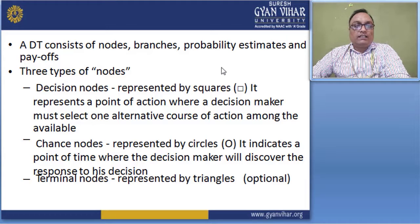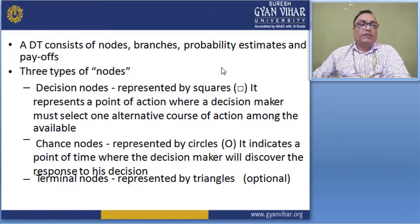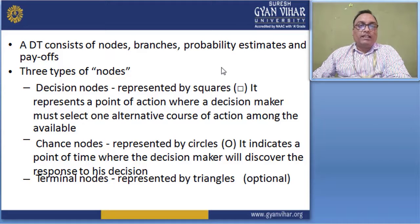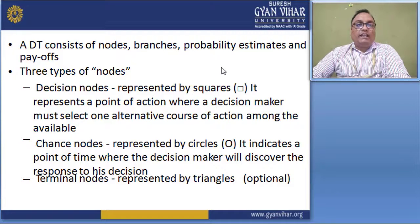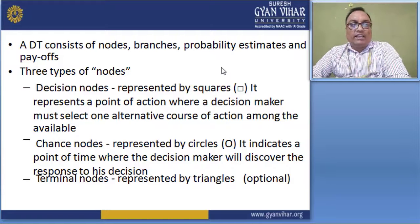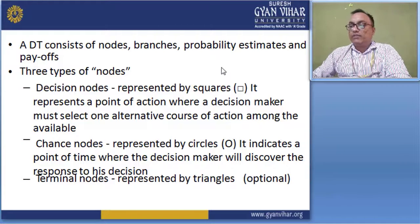The next is the chance node, represented by a circle. It indicates a point in time where the decision maker will discover the response to their decision.